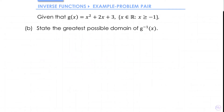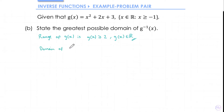In part b we want the greatest possible domain of the inverse function. We know that the domain of the inverse function is the same as the range of the original function. In part a we already found the range, so the domain of the inverse function is x ≥ 2.